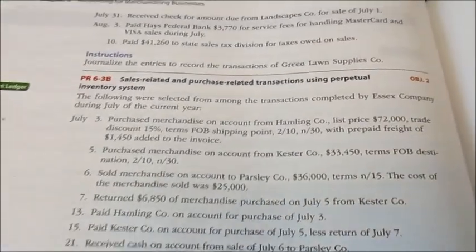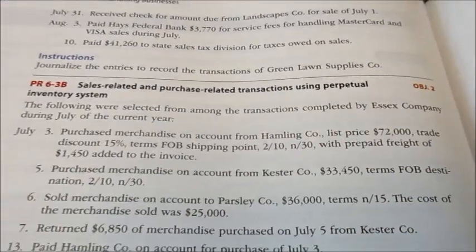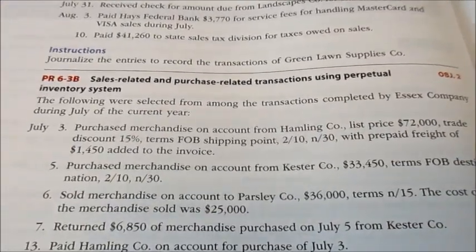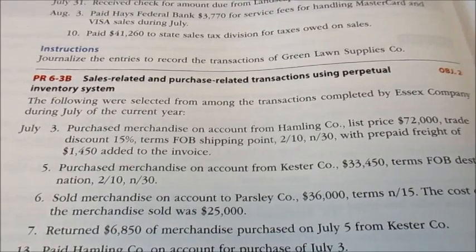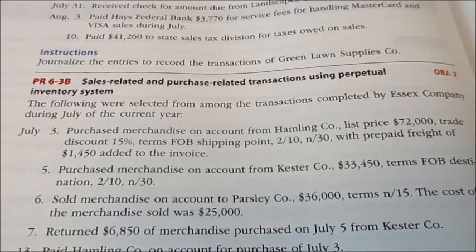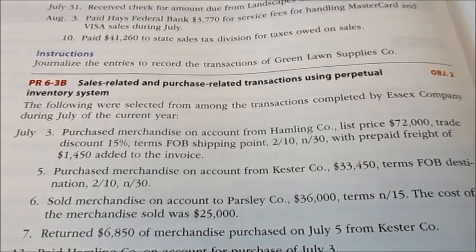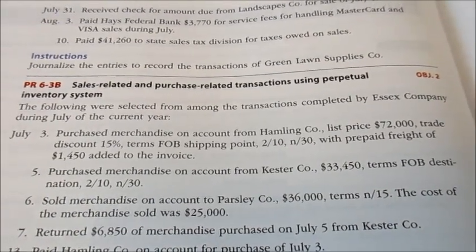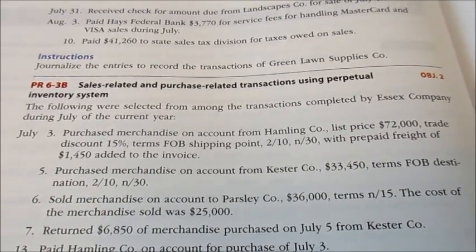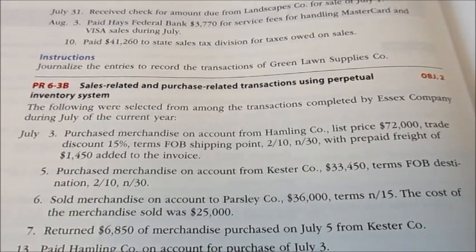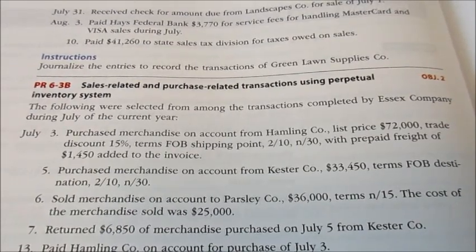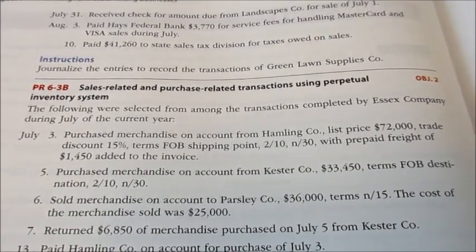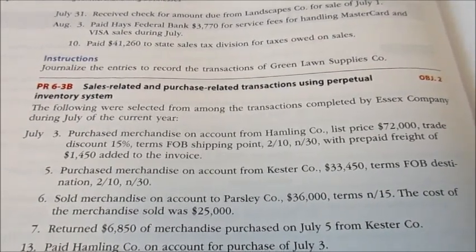Today we're going to tackle Problem 6-3B: Sales-Related and Purchase-Related Transactions using a Perpetual Inventory System. The following were selected from among the transactions completed by Essex Company during July of the current year.